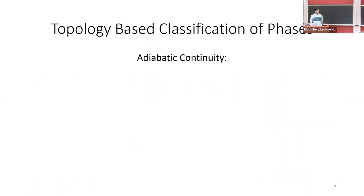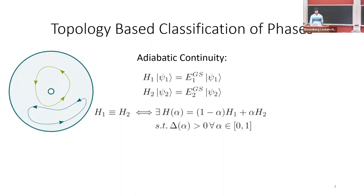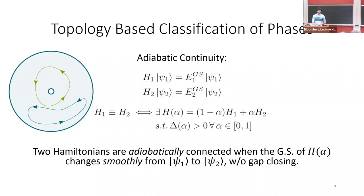How do we classify different phases of matter based on topology? This is done through adiabatic continuity. Suppose I have two Hamiltonians H1 and H2. If there's a path in the space of Hamiltonians that can take me from H1 to H2 and the gap never closes along this path, we say these two Hamiltonians are adiabatically connected — equivalently, the ground states are in the same phase.